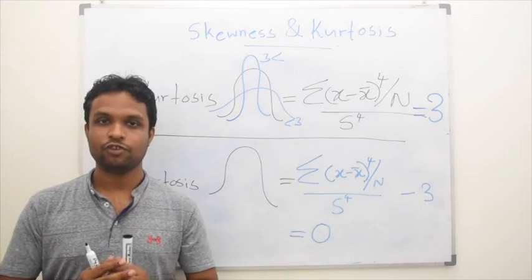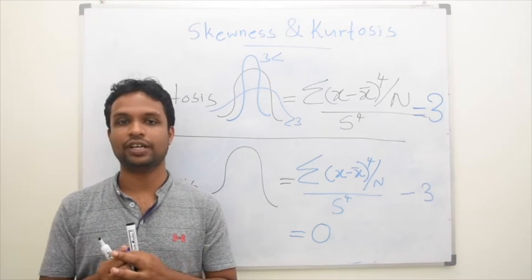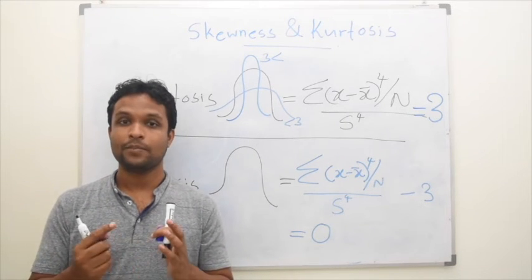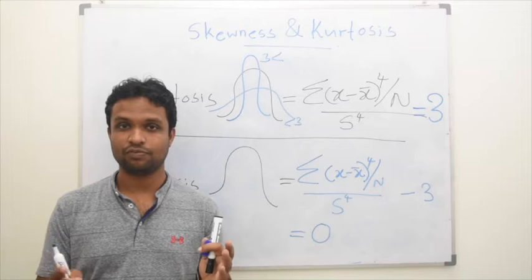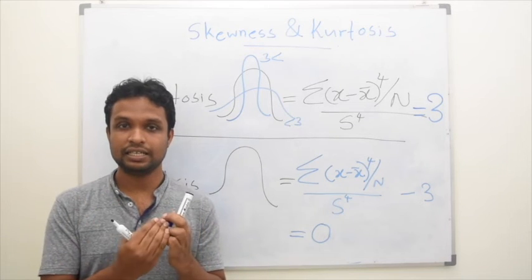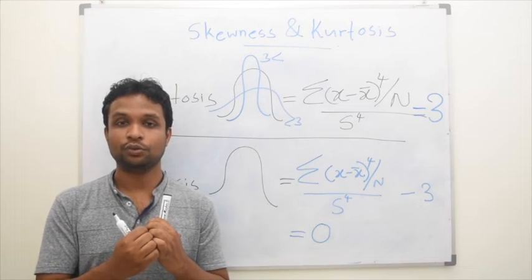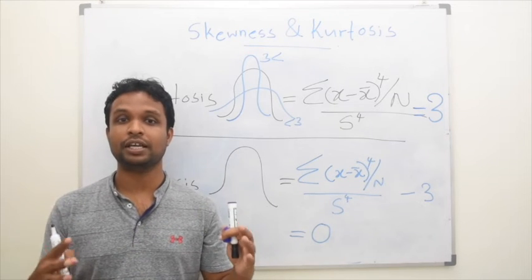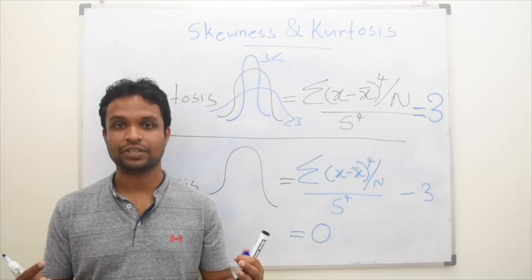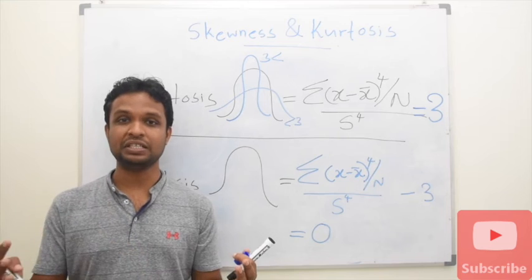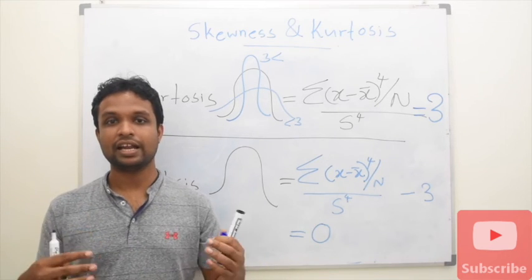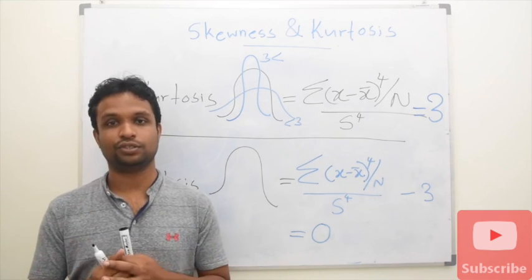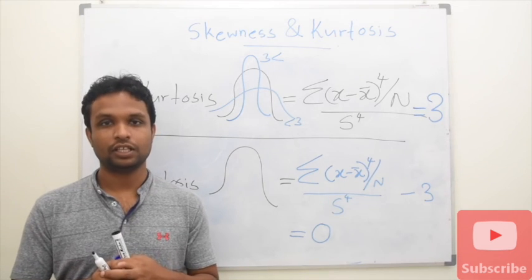Now keep in mind, when you are describing a variable, you need measures of location, either central tendency, quartiles, or percentiles. Then you need to explain the dispersion by measures of dispersion. Then you can explain further by skewness and further by kurtosis. Let's meet in the next lecture.